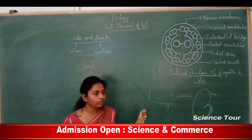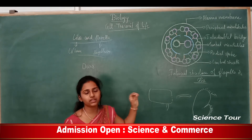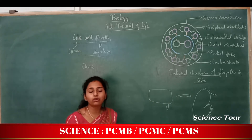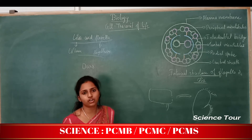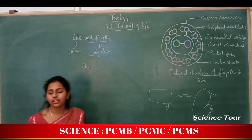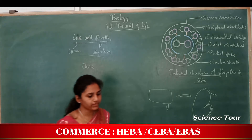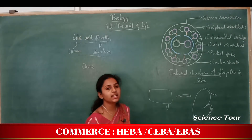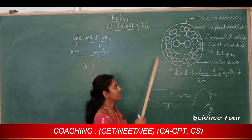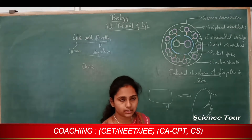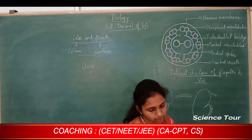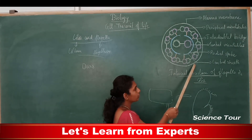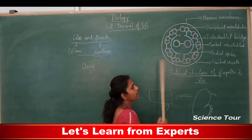The structure of flagella and cilia in eukaryotic cells is different from that of prokaryotic cells. Prokaryotic cells have a simple structure with a small number of microtubules. In eukaryotic cells, we find a more detailed and complex structure of the flagella, which we will study now.